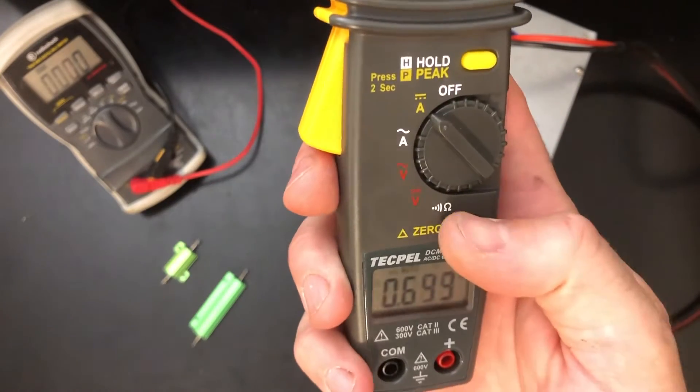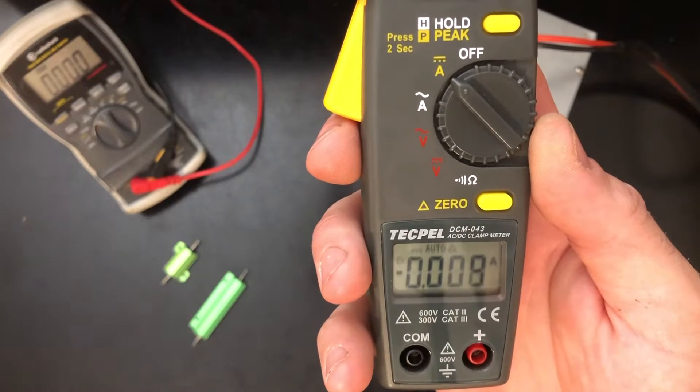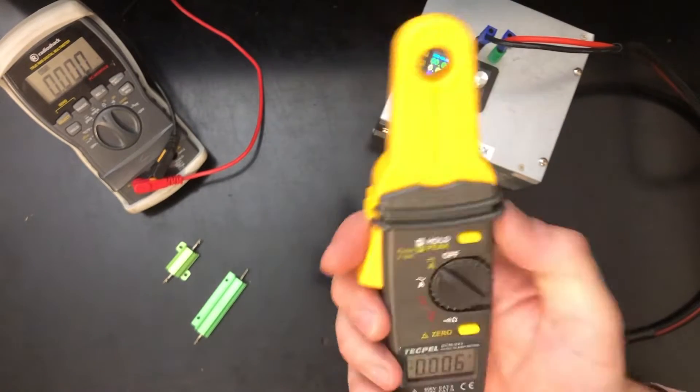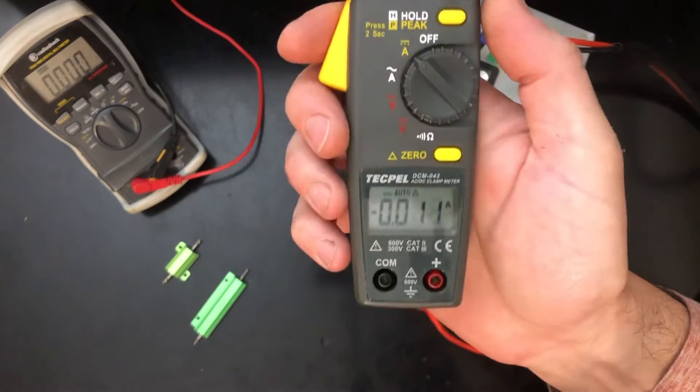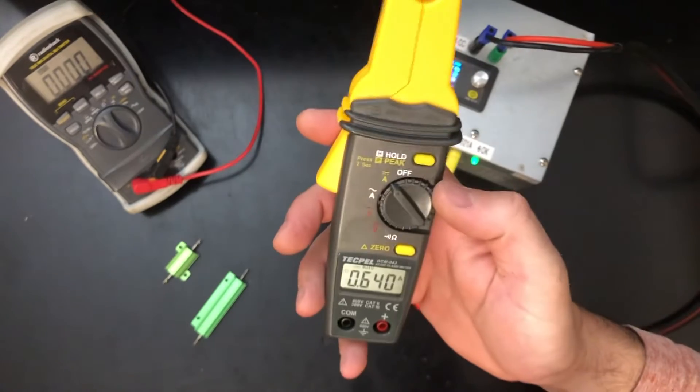Now there is a zero button here, and you can press it, and that will show you differential amperage, the difference between when there's nothing going through it at all and when you have something going through the clamp. But that's not really what I wanted. I wanted it to show zero when there was nothing flowing through it at all.